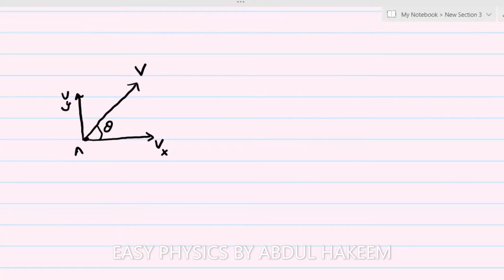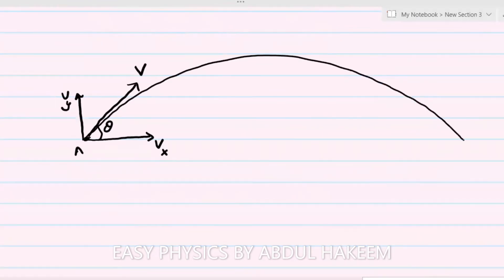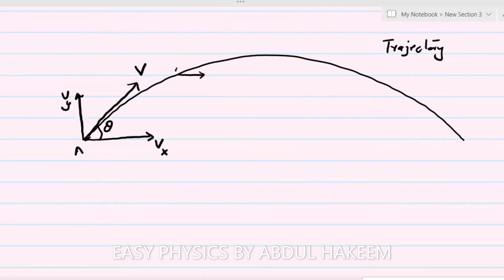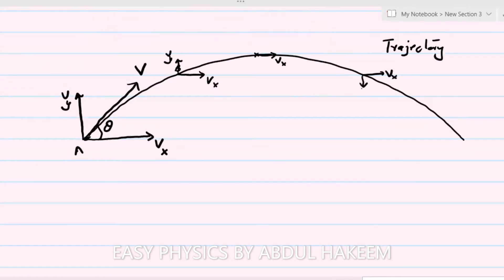Now what is the direction of motion — what is the path of this projectile motion? It goes like this, and this path which is followed by the projectile is called the trajectory. At point B we have vx and vy. At the top of this motion, vx is there but vy is zero. Then vx continues in this direction, and vy acts in the opposite direction on the way down. Here again we have vx and vy.